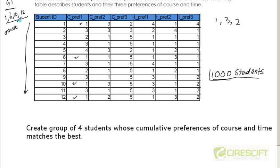Then if that is the case, then I should also see if student IDs 1, 6, 10, and 12, what are their time preferences? And then maybe they are the best fit from the course point of view, maybe the worst fit from the time point of view. Then 1, 6, 10, 12 cannot form a group. So that is what I am saying: cumulative preferences should be the best.